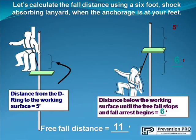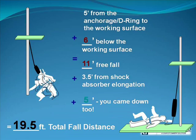Assume a worker working at a height who chooses an anchorage point on the surface where he is working. Distance from the D-ring to the working surface: 5 feet. The distance below the working surface until the free fall stops and fall arrest begins: 6 feet. So the free fall distance is 11 feet — 5 feet from the anchorage D-ring to the working surface, plus 6 feet below the working surface.